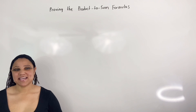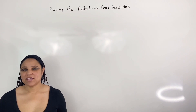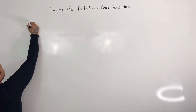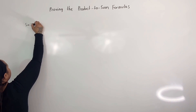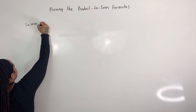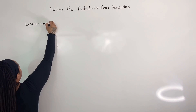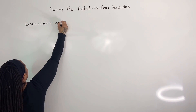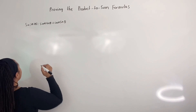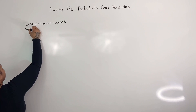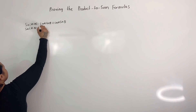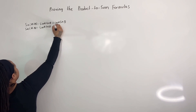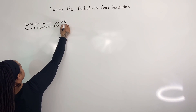Recall the sum and difference formulas for sine. We know that sine of (a + b) is equal to sine of a cosine of b plus cosine of a sine of b. And we know that sine of (a − b) is equal to sine of a cosine of b minus cosine of a sine of b.